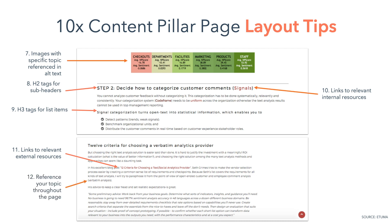Moving down to tip 12, reference the keyword of your specific topic throughout the page — but don't just repeat the exact phrase. Search engines are smart enough to understand synonyms of what you're talking about. And lastly, tip 13: have a back-to-top button. When people click a section they want to learn more about, they can easily jump back to the top. People probably won't read your entire page, but they may find one section interesting enough and want to download it. You want to make this process as easy as possible — forgetting this step could require endless scrolling, leading to frustration and the reader leaving your page.